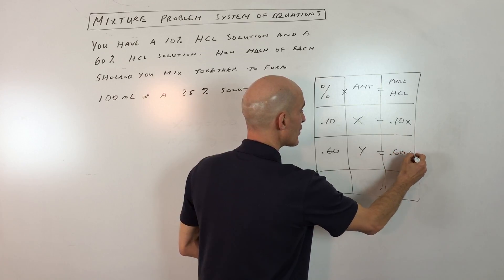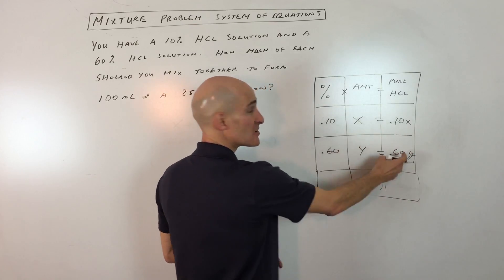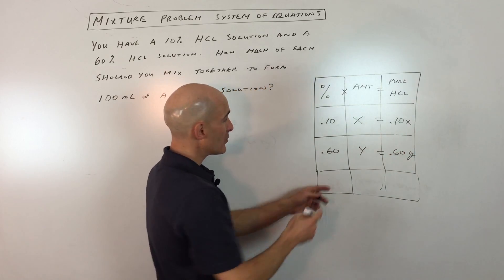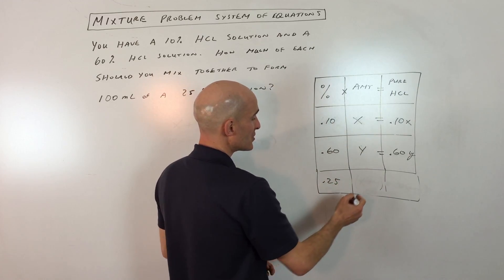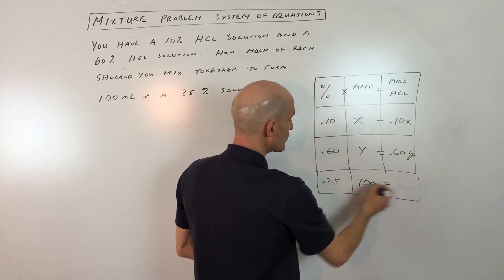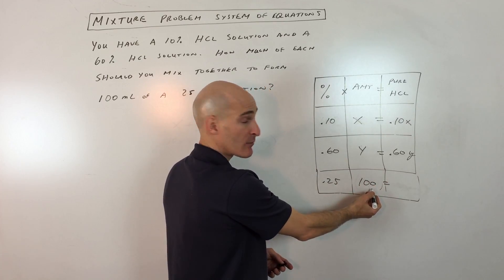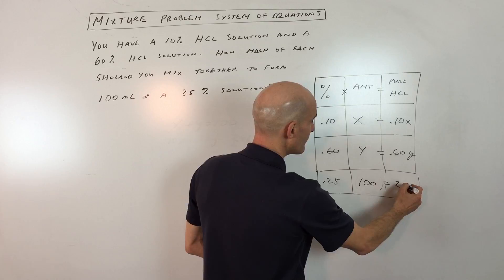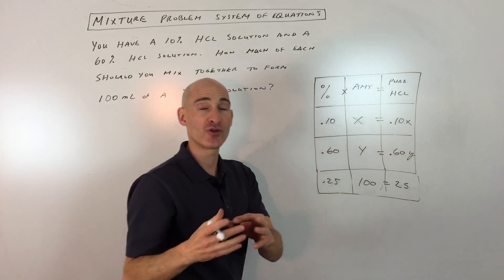The number of milliliters of pure hydrochloric acid in the 60% solution. And then we're going for a 25% solution, and we want it to be a total of 100 milliliters, which when you multiply the percentage times the number of milliliters, that's going to give you 25 milliliters of pure hydrochloric acid.